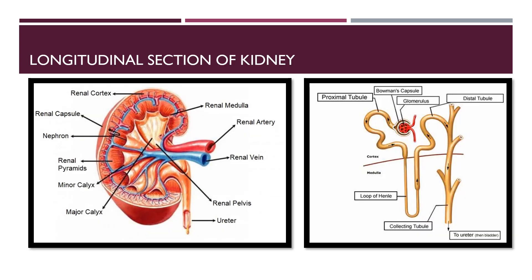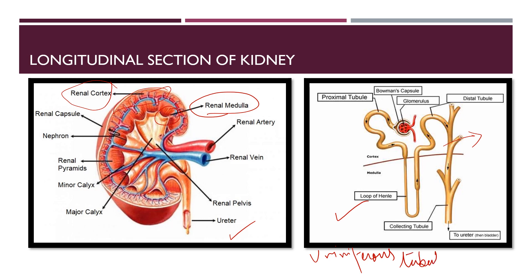Now we will look at two diagrams — a longitudinal section of a kidney and the structure of a nephron. The nephron is the structural and functional unit of the excretory system or kidney. Each kidney is composed of an outer darker region called the renal cortex, and an inner lighter region called the medulla. Inside each kidney there are millions of microscopic filtering tubes called nephrons, also known as uriniferous tubules.